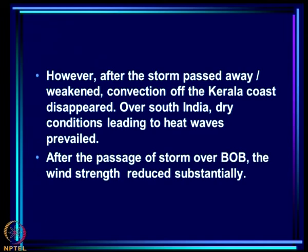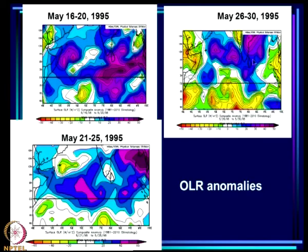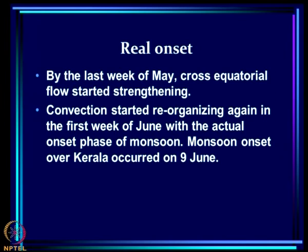After the storm passed and weakened, convection off the Kerala coast disappeared and dry conditions with heat waves prevailed over south India. By May 16–20, the storm had passed — the entire Indian region is dry and this persisted through late May. Towards the end of May, convection began building up over the south equatorial Indian Ocean. Once convection disappeared from the Bay, the winds also became lax and the whole phenomenon ended without leading to a monsoon transition.